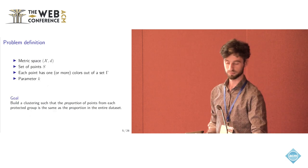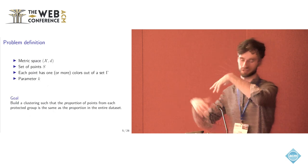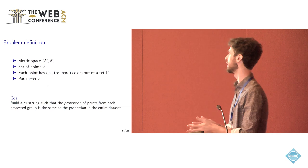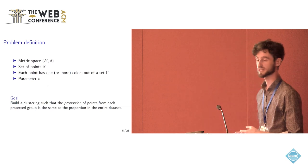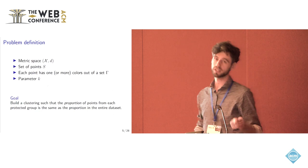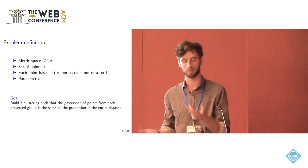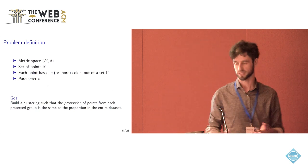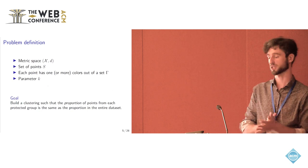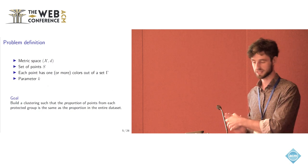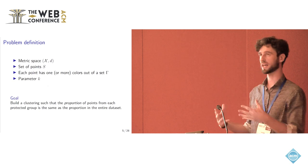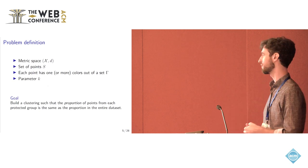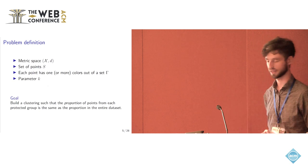To make things more formal, we are working in the usual metric space with the distance function d. We have a set of points s. And now each point is colored with one, or actually more colors, out of some set. And then we have the parameter k of the number of clusters we want. We want to find a clustering which is very compact but also that has a good proportion of points of each color in each cluster.